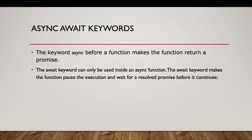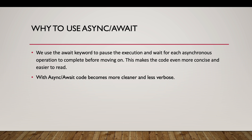There are other keywords to handle asynchronous responses — the async keyword is used before a function and makes it return a promise. With the async function we also have the await keyword. The await keyword can only be used inside an async function and makes the function pause execution and wait for the asynchronous operation to complete before moving on.